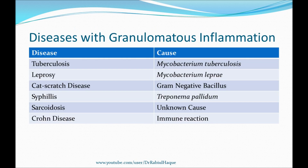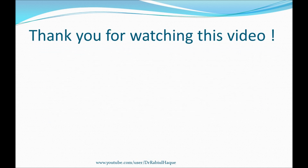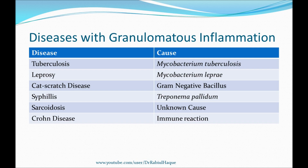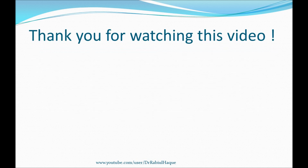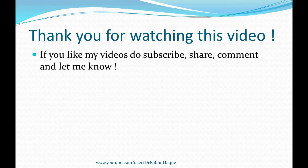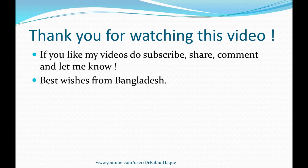We will finish today's video with a table showing diseases caused by granulomatous inflammation, including tuberculosis, leprosy, cat scratch disease, syphilis, sarcoidosis, Crohn's disease, and their causative agents. This concludes today's video on chronic inflammation. Since inflammation is a very big topic, I made three separate videos to cover the major aspects. If you like my videos, please subscribe, share, and comment. For my students, I also recommend going through your textbooks for more information. That's all for today — take care and stay blessed. Thank you.